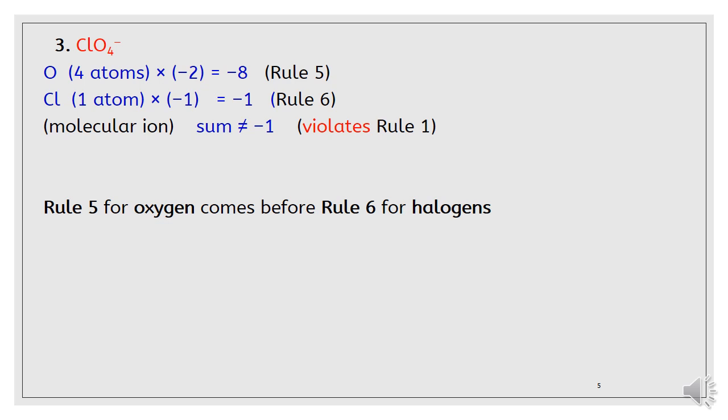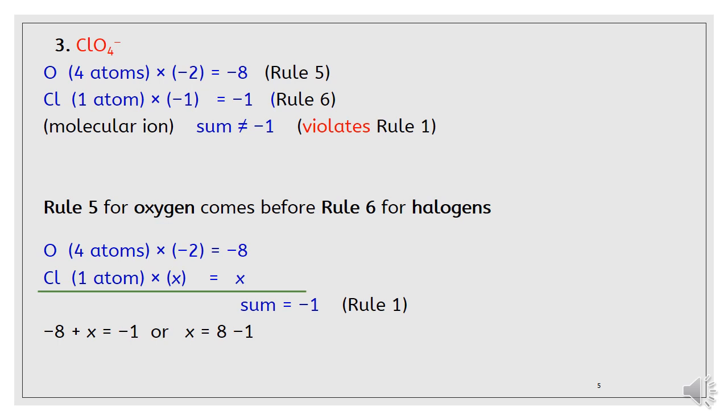Rule five for oxygen comes before rule six for halogen. So, we work with rule five and ignore rule six. We have four atoms of oxygen multiplied by -2. The oxidation state of oxygen equals -8. Cl atom, the oxidation state of Cl atom is x. The summation of -8 plus x must equal -1. So, x will be +7. And so, the oxidation state of Cl atom is +7.